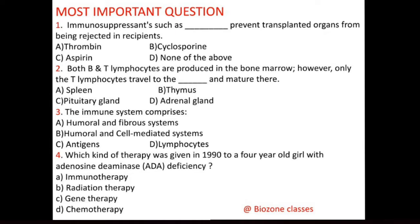Question number 2: Both B and T lymphocytes are produced in the bone marrow. However, only the T lymphocyte travels to and matures there. Options: A. Spleen, B. Thymus, C. Pituitary gland, D. Adrenal gland. The correct option is thymus. Both lymphocytes are produced in bone marrow, but T lymphocytes mature at the thymus gland, and that's why they are called T lymphocytes.